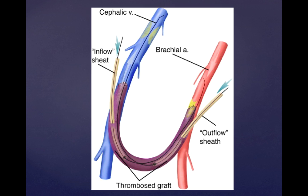At this time, the final step is to remove the arterial platelet plug from the arterial anastomosis or arterial inflow side. After this, we perform a completion angiogram, verify that the graft is open, check for a pulse, and check for a thrill. We then use purse strings to remove our sheaths and close the puncture wounds used for access. Pressure can also be applied until hemostasis is achieved. At this point, you will have completed the basic treatment, or declotting, of an AV fistula graft.